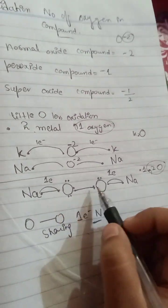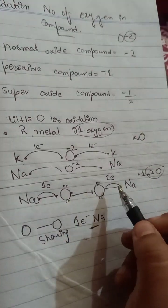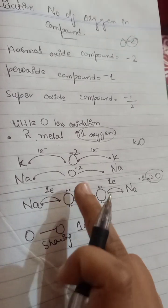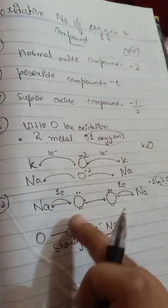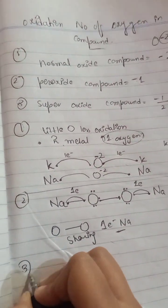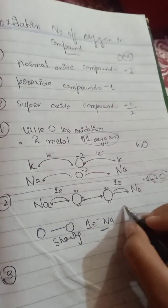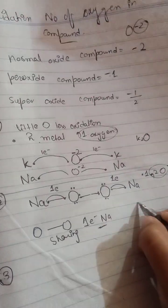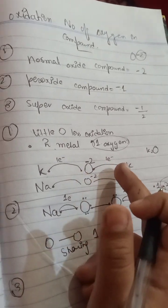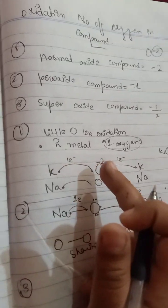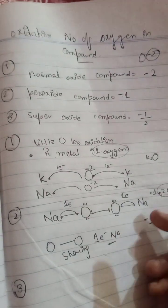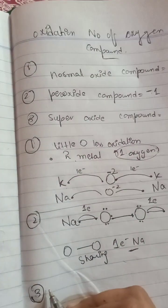Oxygen is not fully participating in gaining or losing electrons because of the oxygen-oxygen sharing, so we cannot assign a full -2. That's why in peroxide, the oxidation number is minus one for each oxygen — because they have only gained one electron instead of two.